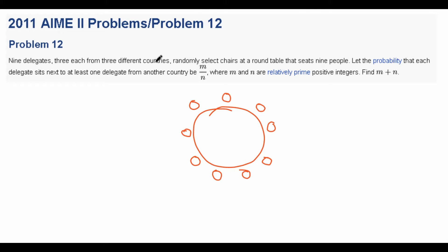So instead of finding the probability that each delegate sits next to at least one delegate from another country, we want to find the probability that there exists at least one delegate that sits next to only people from their own country. If a delegate is from country A and sits next to only people from their own country, those neighbors must also be from country A — meaning three consecutive seats are from the same country. We want this pattern to hold at least once. We'll find the total number of arrangements as the denominator and the number of ways this happens as the numerator.